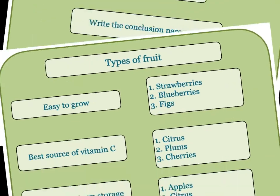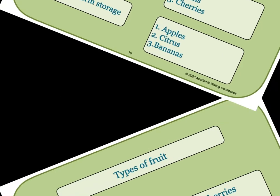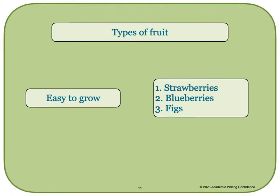In the essay we just finished writing, we used three types of fruit using specific categories and gave examples for each one. We could also write a classification essay in a different way — we could take just our category of easy to grow and use our examples as different types of fruit that are easy to grow, writing body paragraphs about each of these types.